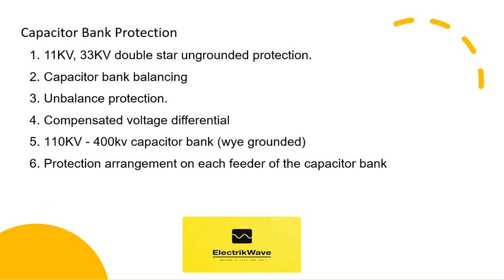Now we will see in detail various protection for 11kV and 33kV double star ungrounded protection, capacitor bank balancing, unbalance protection neutral CT fed relay, compensated voltage differential, 110kV through 400kV capacitor bank Y grounded, and protection arrangement on each feeder of the capacitor bank. Now let's understand each one by one.